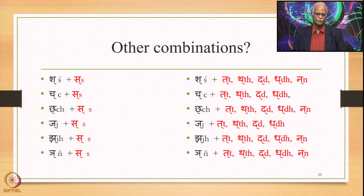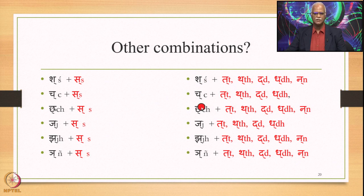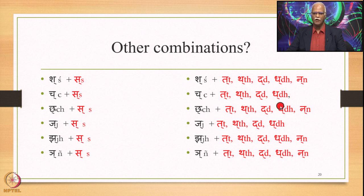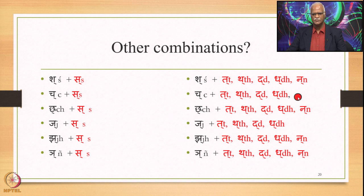These are the other combinations. On the left-hand side: Shuh plus Sa, Chuh plus Sa, Chuh plus Sa, Juh plus Sa, Juh plus Sa, and Yen plus Sa. On the right side: Shuh plus Tavarga, Chuh plus Tavarga, Chuh plus Tavarga, Juh plus Tavarga, Juh plus Tavarga, and Yen plus Tavarga. The Nimitta is Purva and the Sthani occupies the Para place. Amongst these, some combinations are already omitted — they are taken care of by other rules and that is why they are not mentioned here.